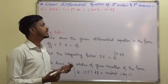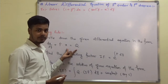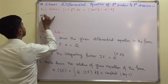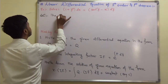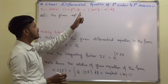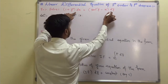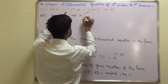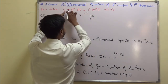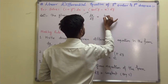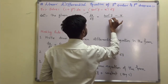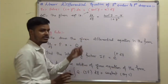Since we are dealing with a type 2 problem, try to write the given equation in the standard form. The given equation is (1 + y²) dx = (tan⁻¹y − x) dy. The next step is to write dx/dy by taking the appropriate terms to each side, giving dx/dy = (tan⁻¹y − x) / (1 + y²).